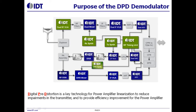Let me explain why DPD is important for base station transmitters. Non-linearity of power amplifier transistors generates distortion that becomes interference between carriers, limiting the number of subscribers and degrading communication quality. DPD is a technology for PA linearization that compensates transistor non-linearity, using this technique to reduce crosstalk between carriers and improve PA efficiency dramatically.